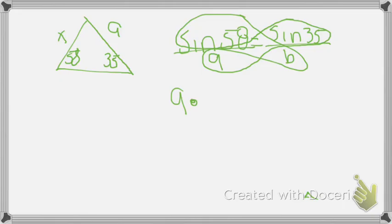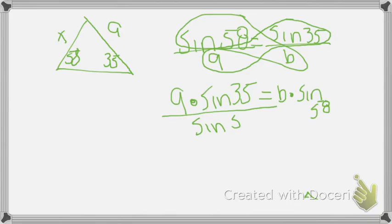And then sine 58 was over 9. Then I cross-multiplied and got 9 times sine 35 equals B sine 58.